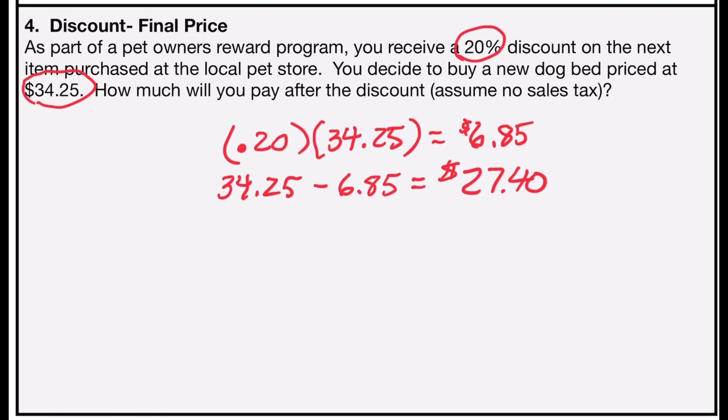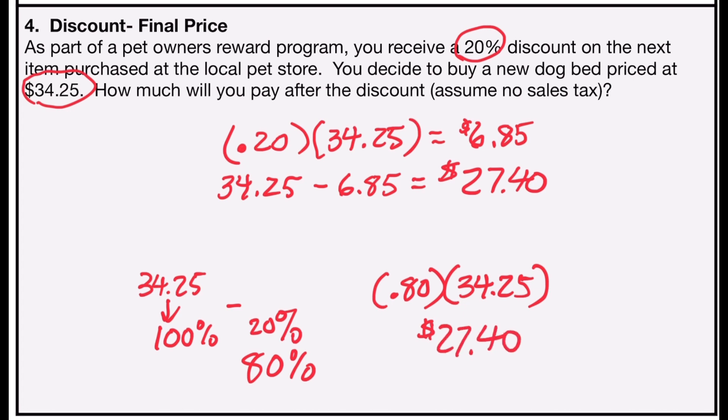Similar to the last problem, we can also use a shortcut. If we say that $34.25 is the full price, or 100% of the price, and subtract out the discount, which is 20%, I would find out I'm paying 80% only on the total price. And I can just do one multiplication, 80% in decimal form, 0.80, times the $34.25 that the dog bed would cost. And again, I'll get the same answer of $27.40. So just like the last problem, you could do it in two steps, find the savings and subtract it out to find the answer, or you could subtract out the percents, and then just multiply it by the original price to find your answer.